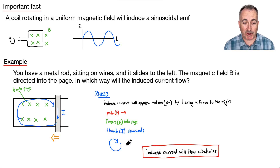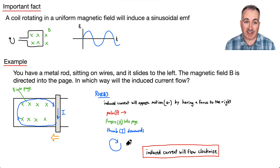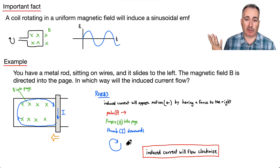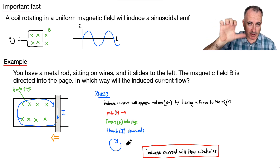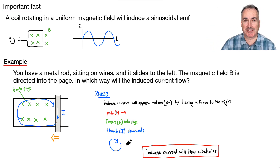Lenz's Law says the induced current or induced EMF will be such that it opposes the motion. You have to think about which hand rule allows you to oppose the motion — in this case it was right-hand rule number three. The other case, like with the electromagnet, used right-hand rule number two, where you're creating a north-south on some end of the electromagnet.